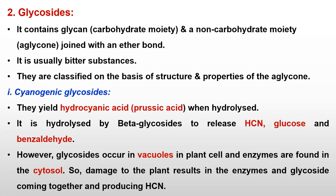Hydrolysis by beta-glycosidase releases hydrocyanic acid, glucose, and benzaldehyde. So three compounds are formed after hydrolysis of cyanogenic glycoside: HCN, glucose, and benzaldehyde. Glycosides occur in vacuoles of the plant cell and the enzymes are found in the cytoplasm.